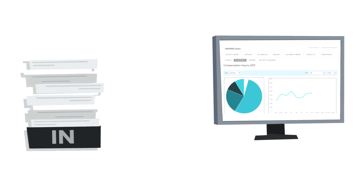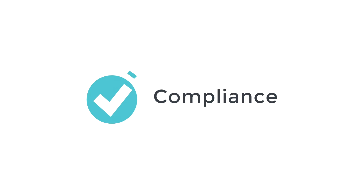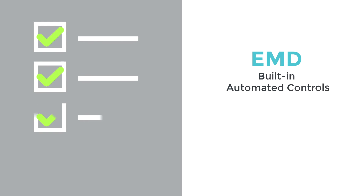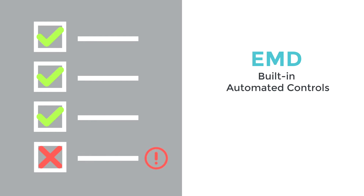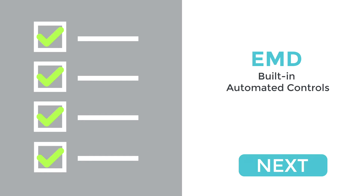Flex for EMD is a comprehensive, unified technological platform that digitizes all of this information and puts it at your fingertips with the click of a mouse. Flex for EMD has built-in, automated controls that ensure every box has been ticked and all requirements are met. If Know Your Client or Know Your Product information is missing, Flex for EMD flags it automatically and won't allow a trade to proceed until the information is added.